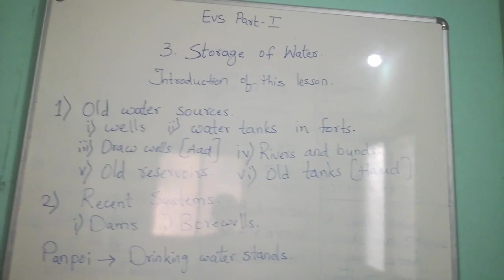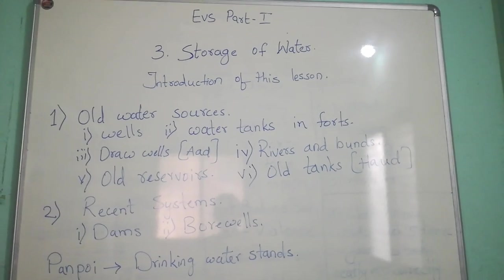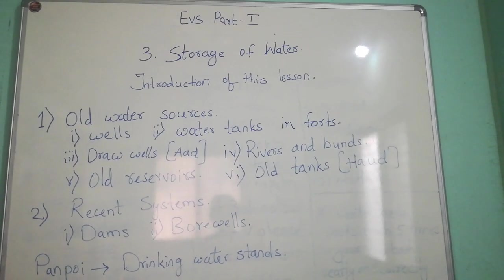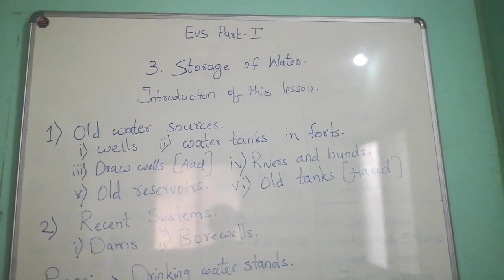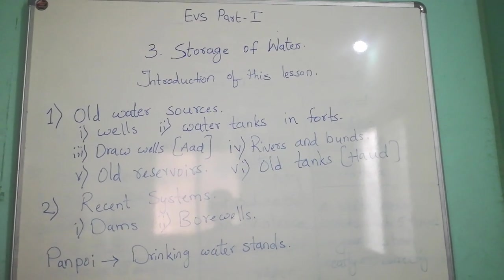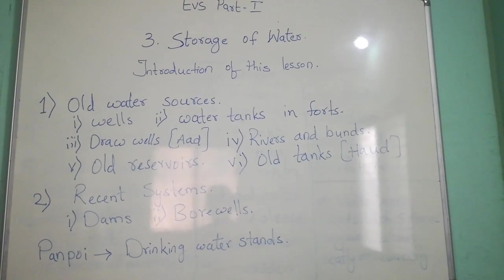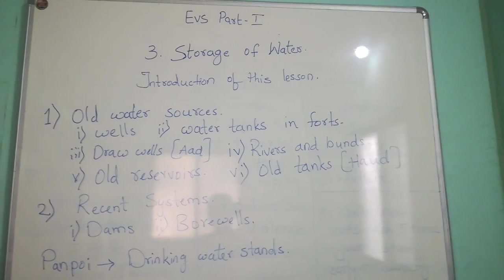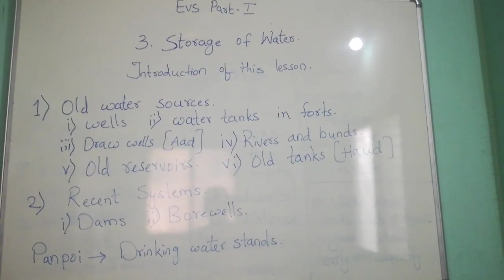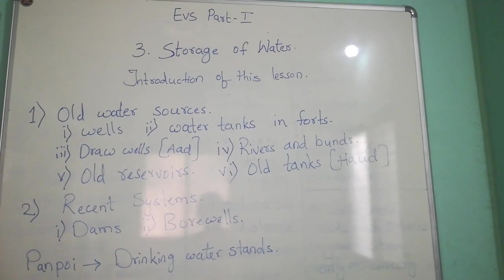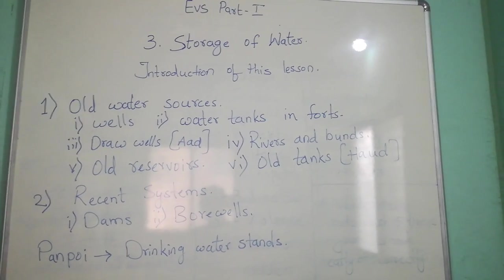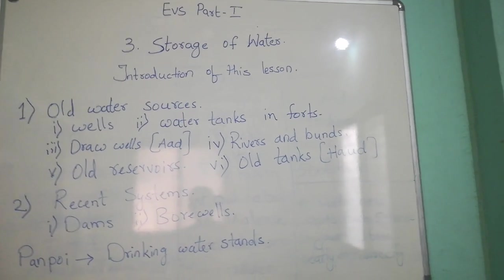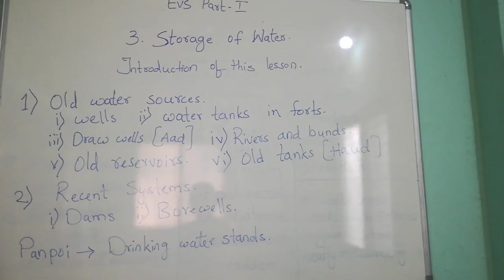Dams are the most important recent water storage. Dams make it possible to store huge quantities of water. As a result, more land is brought under cultivation. In Maharashtra, several such dams include Jayakwadi, Koyna, Ujani, Yealdari, etc.